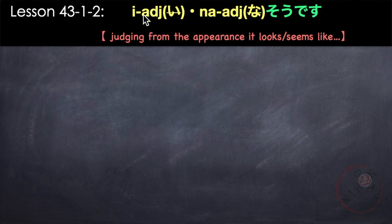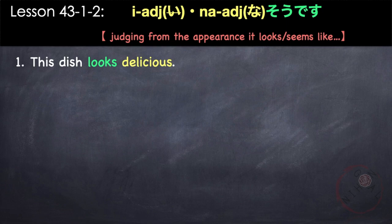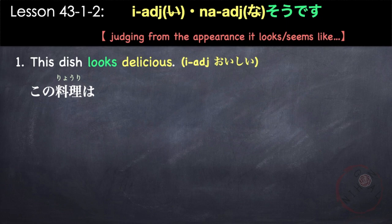Next is using adjectives — i-adjectives and na-adjectives. We remove i from i-adjectives and na from na-adjectives, followed by so desu. This means that judging from appearance, it looks or seems like nani nani. For example, 'This dish looks delicious.' Our adjective is oishii. Kono ryori wa oishi so desu.